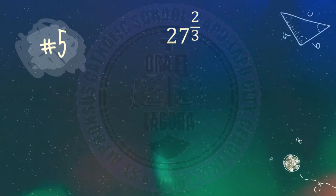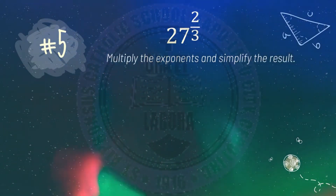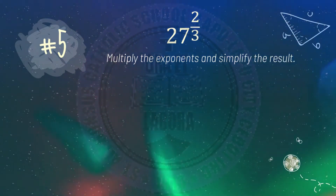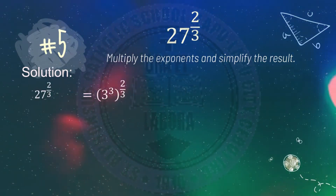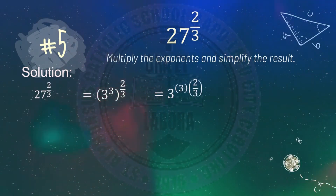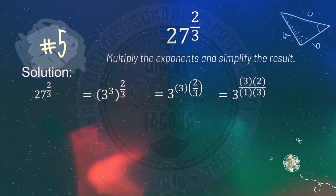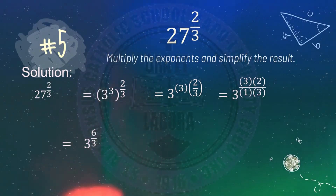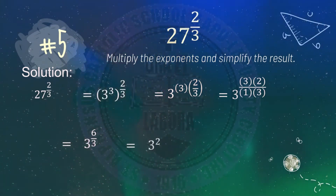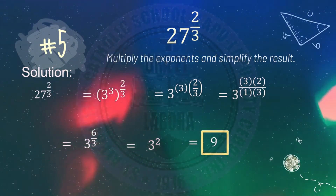Number five: 27 raised to 2 thirds. Multiply the exponents and simplify the result. First, change 27 into its exponential form, which is 3 cubed. So you have 3 cubed raised to 2 thirds. Multiply 3 by 2 thirds: 3 times 2 all over 1 times 3 equals 6 over 3, which simplifies to 2. So the result is 3 squared, which equals 9. The final answer is 9.